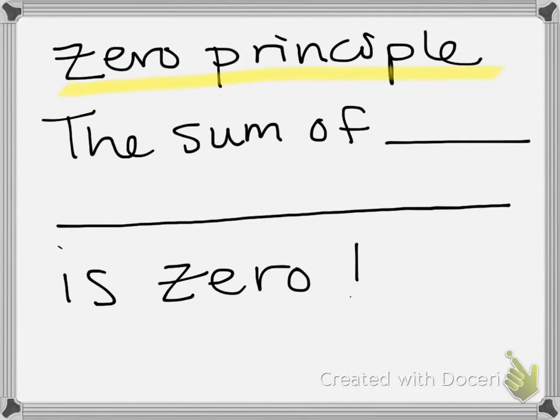Now the next thing we're looking at is the zero principle and that's actually looking at those integers. If you were to add negative 4 and positive 4 you would actually end up with zero. So the zero principle actually means that the sum of two opposite integers is zero.